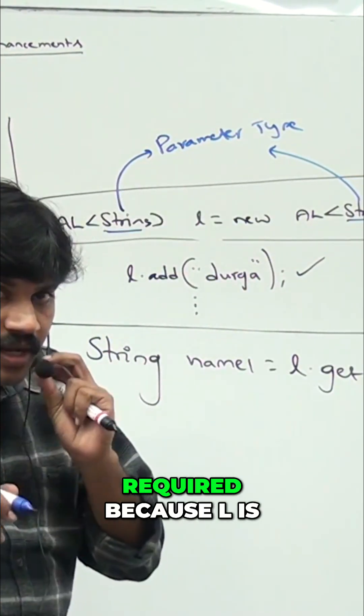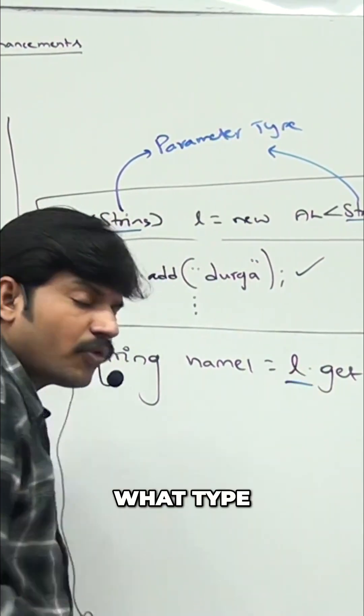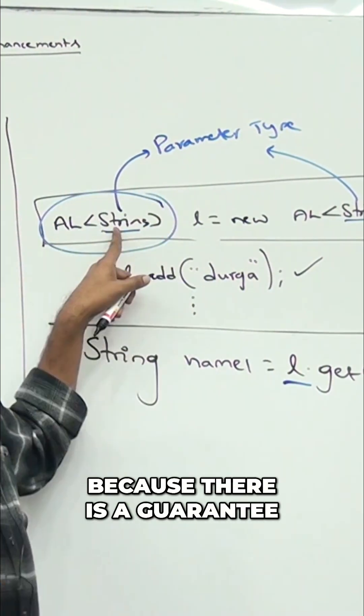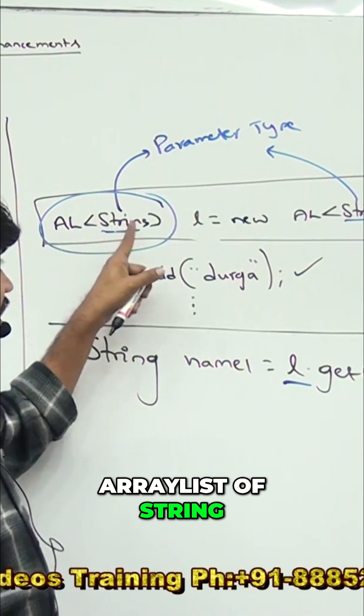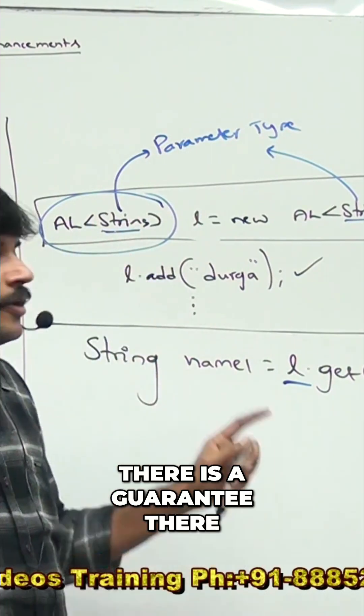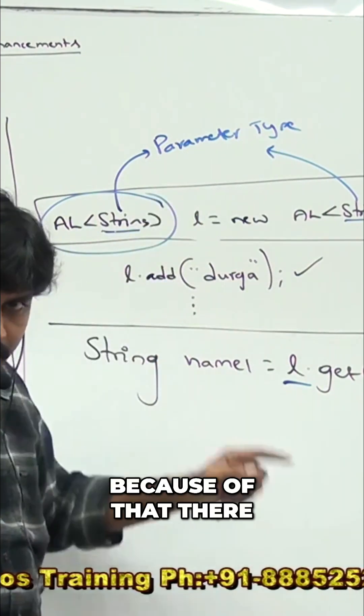Because l is what type? ArrayList of String type. Because there is a guarantee - it is ArrayList of String, there is a guarantee.